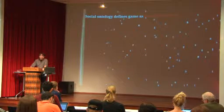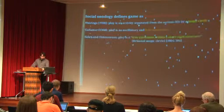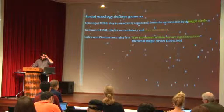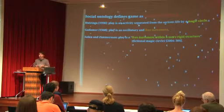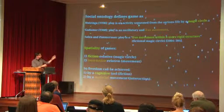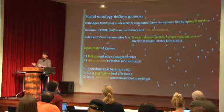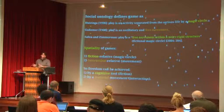Social ontology defines a game as an interactive fiction — fiction as make-believe. We find the fiction side in Huizinga: according to him, play is an activity separated from reality by a magic circle, which defines a fiction. According to Gadamer, play is an oscillatory and free movement in space. Salen and Zimmerman combined these reflections with their definition of play as free movement within a more rigid structure, the structure being the fictional magic circle. So the spatiality of games is fiction-relative — relative to the magic circle — and interaction-relative — relative to movement.